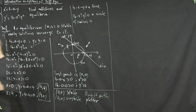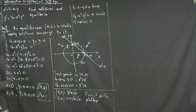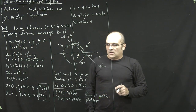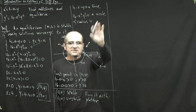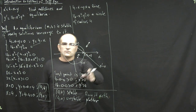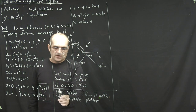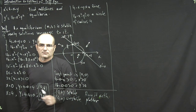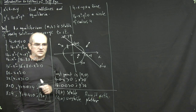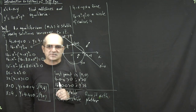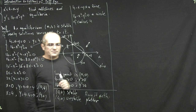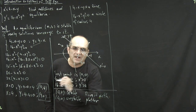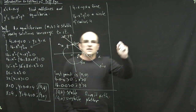We will revisit nonlinear systems at the end of the class and figure out a way to determine stability in some cases without resorting to the plotter, using a mathematical tool called the Jacobian method. That's the last major topic in the course. But for most of this chapter, we're going to deal with linear systems.